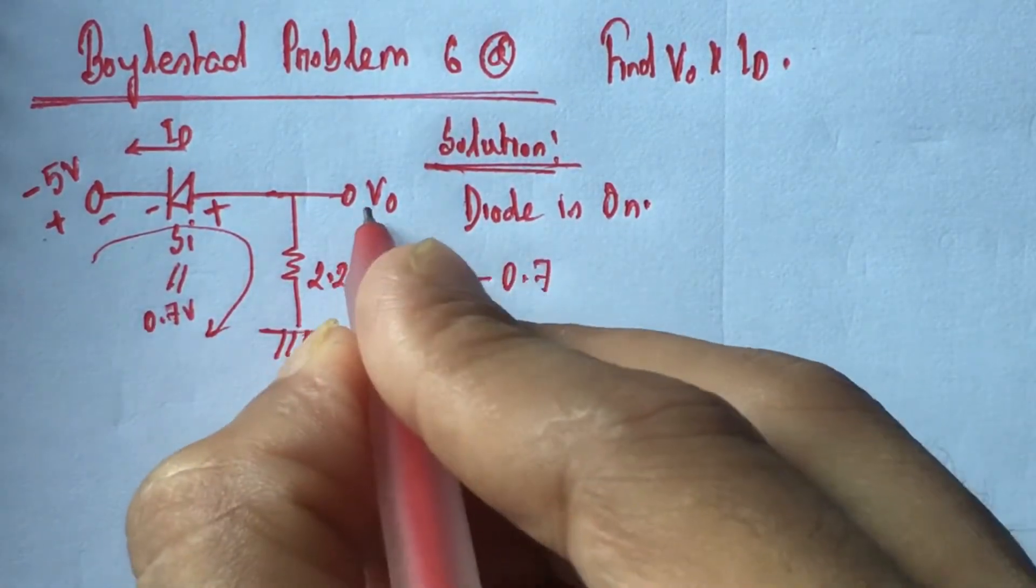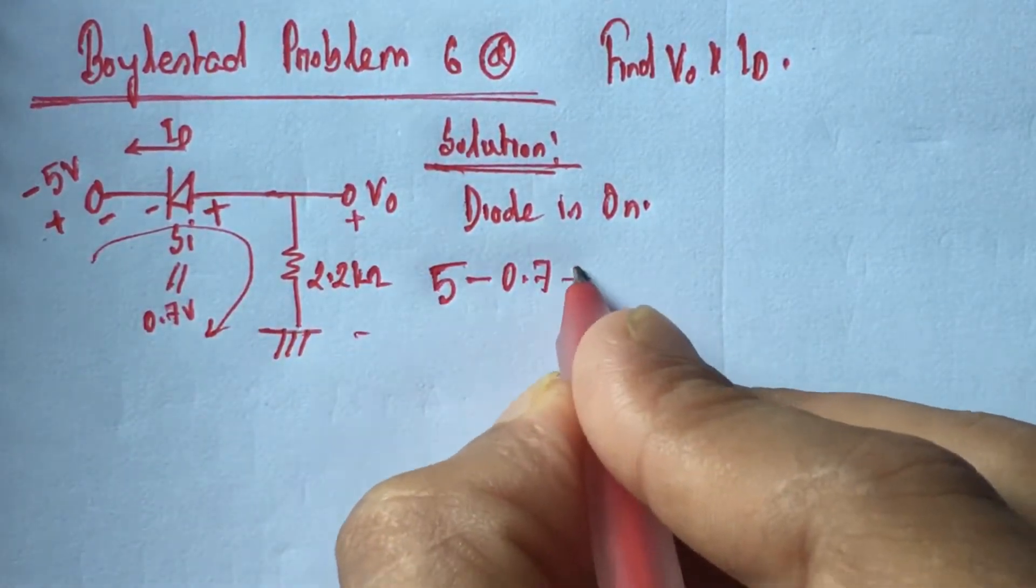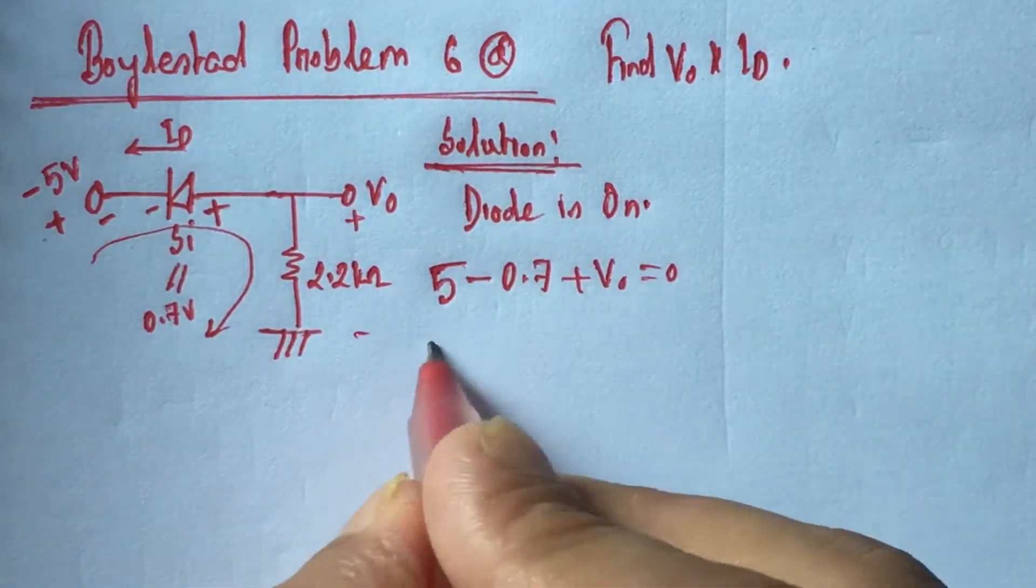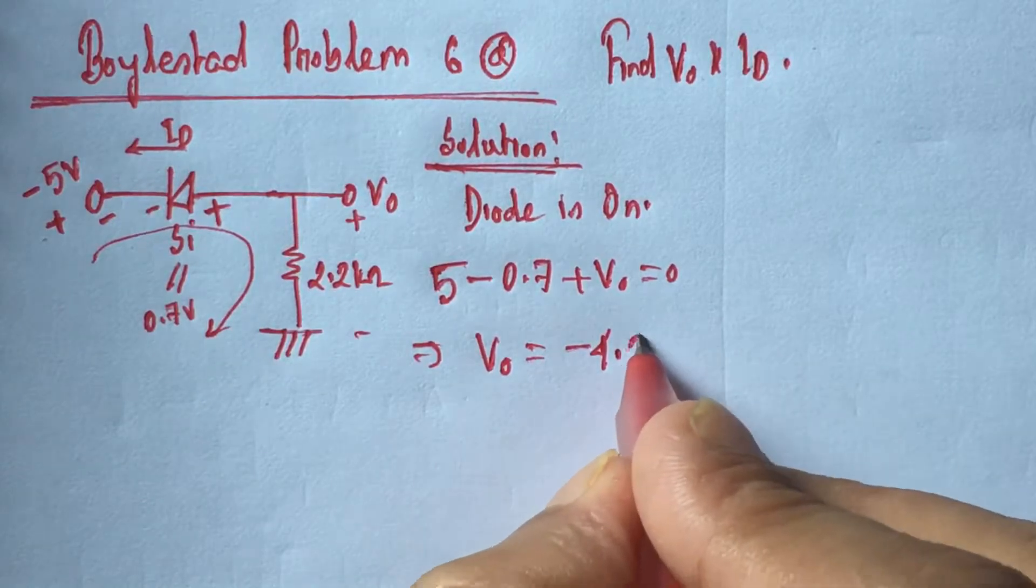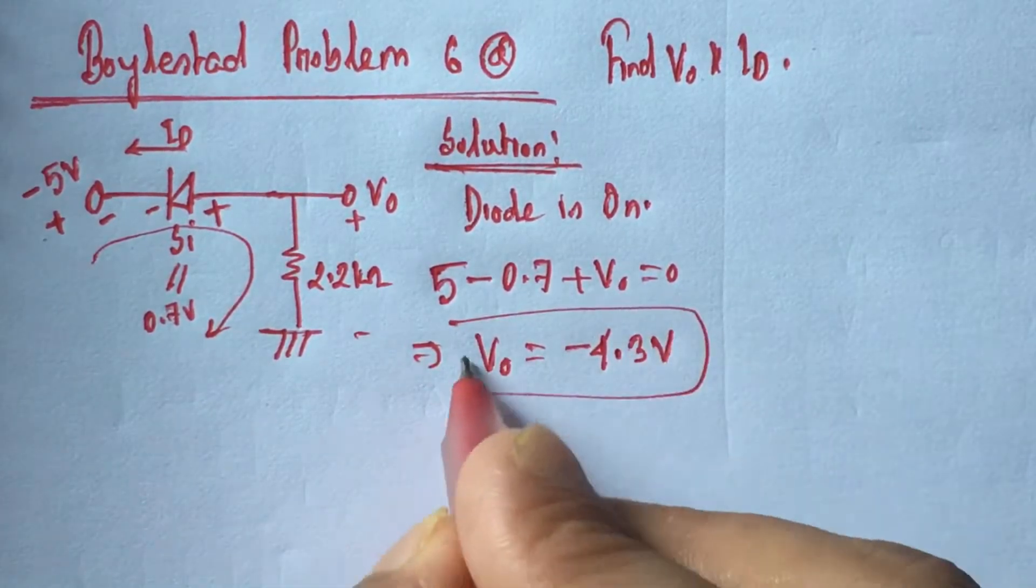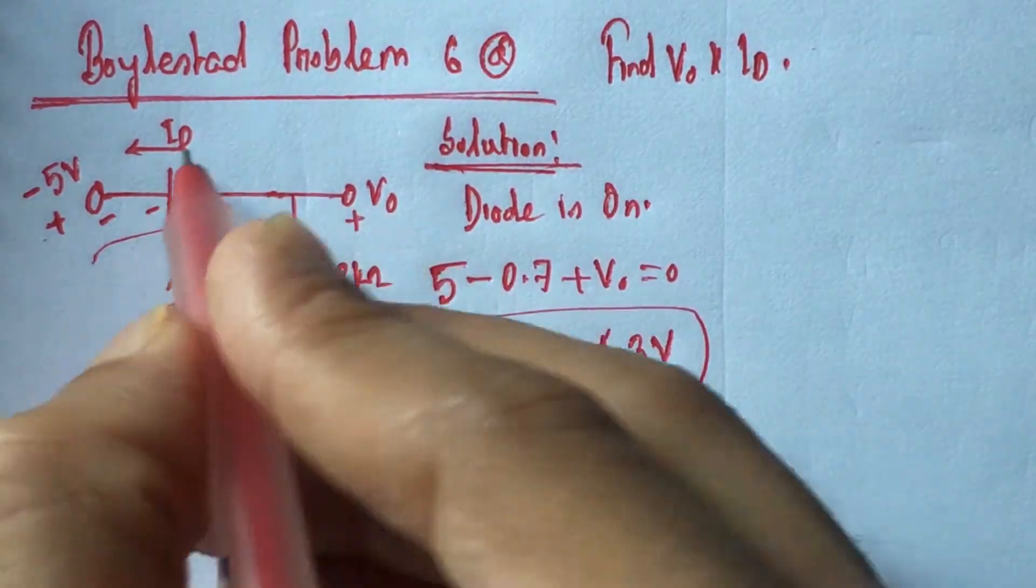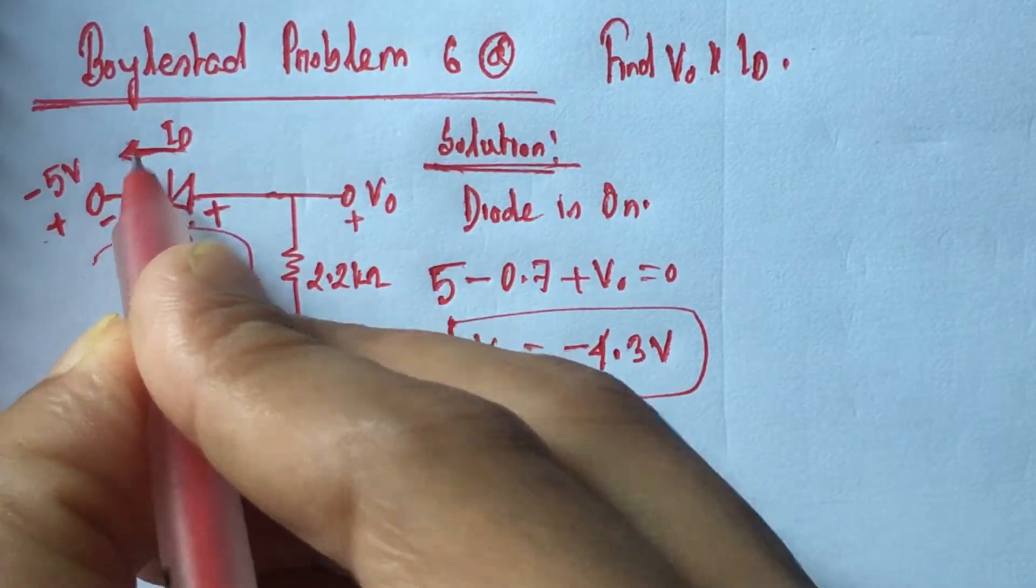0.7 plus V0 is equal to 0. That is V0 equals minus 4.3 volts. Now current is flowing through this way.